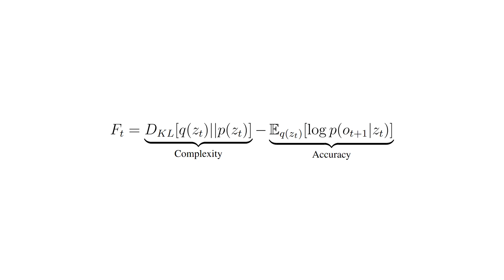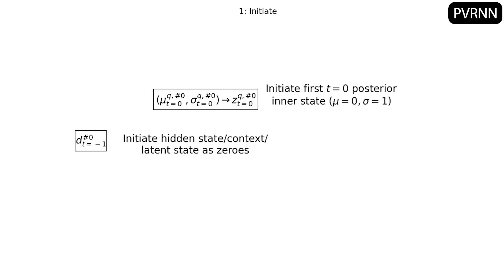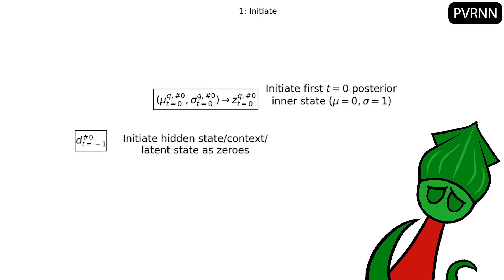We can do this with a PVRNN. When we make this initial hidden state, let's also make a probability distribution called the posterior inner state. It'll start as just the normal Gaussian bell curve, mean 0, standard deviation 1. Again, it feels weird making a posterior before the model actually gets any information, but hold on.